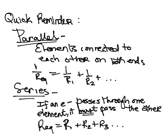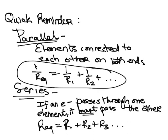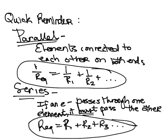So just as a quick reminder, before I go ahead and find the equivalent resistance of the circuit, parallel elements are connected to each other on both ends, and this is the equation for finding the equivalent resistance of parallel elements. Series elements are connected such that electrons passing through one must pass through the other, and we find their equivalent resistance in this way.